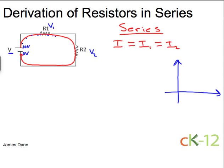Some of the 10 volts is dropped here, some of the 10 volts is dropped here in V2, but then when I get back here, I have to be at zero.